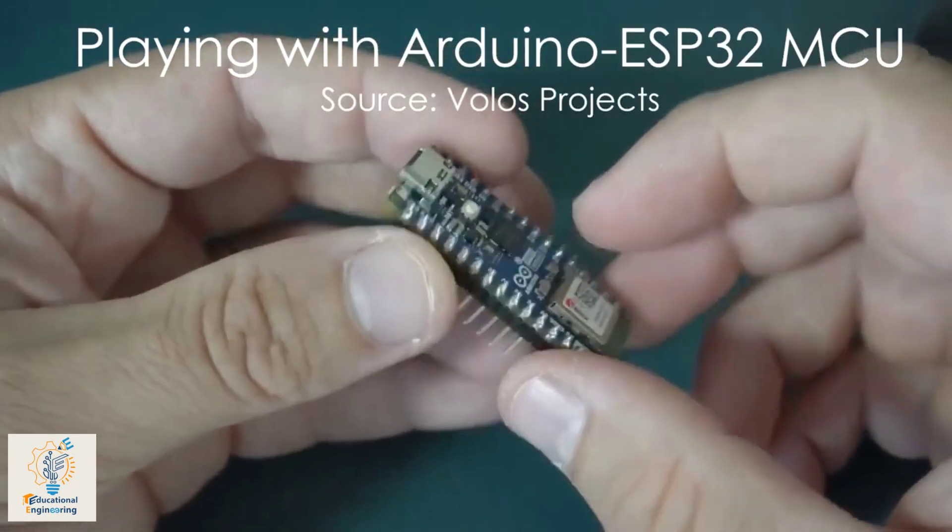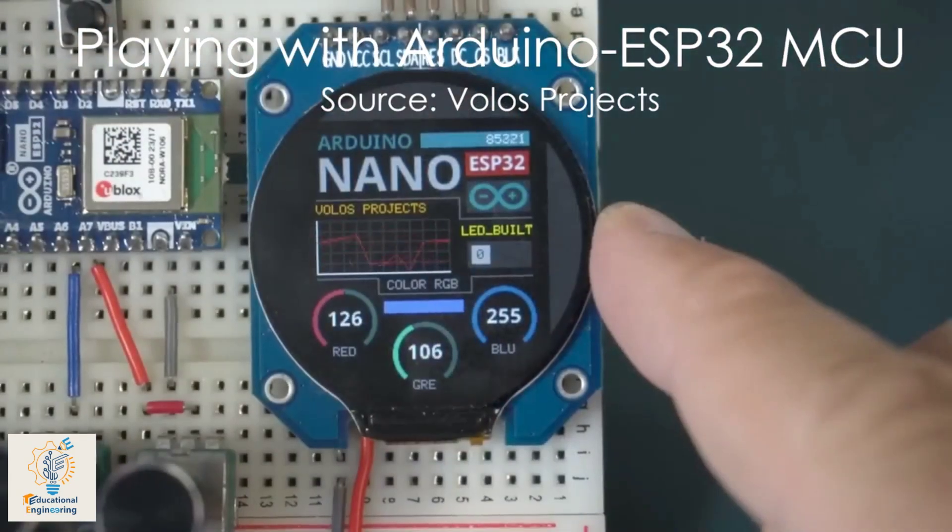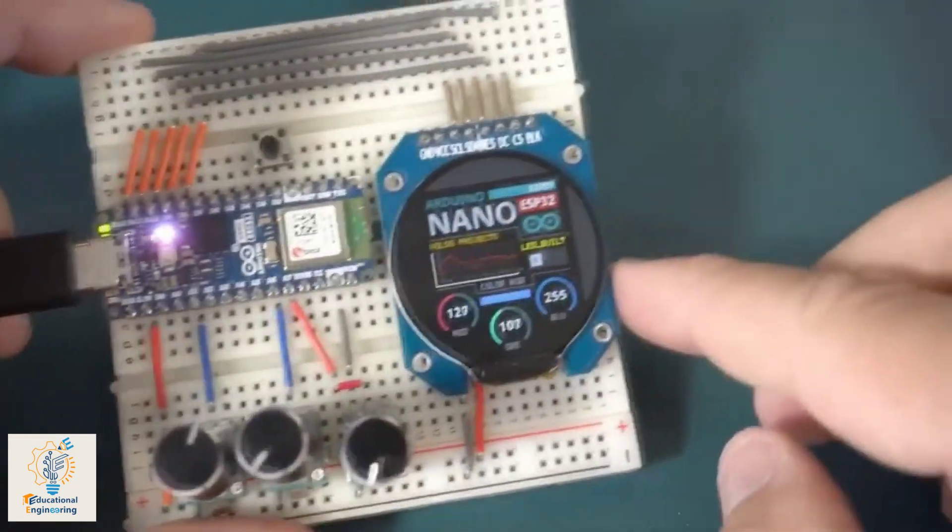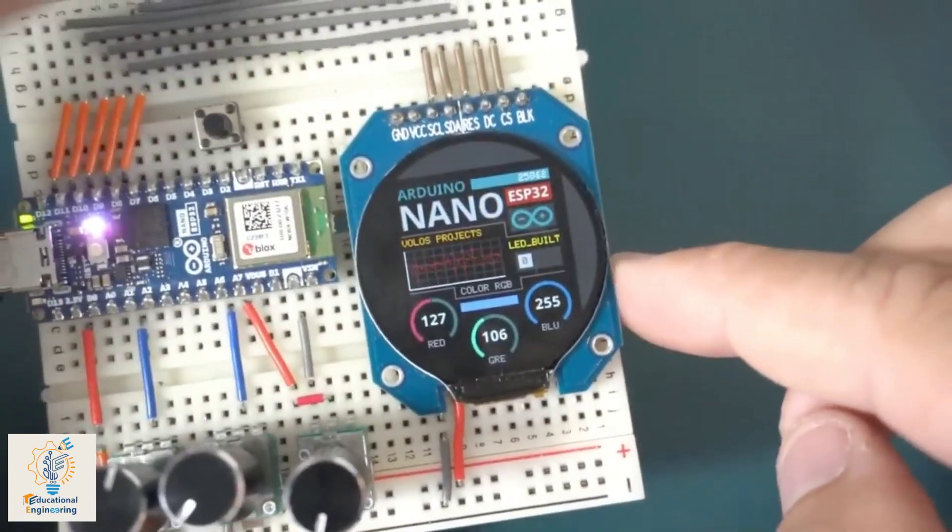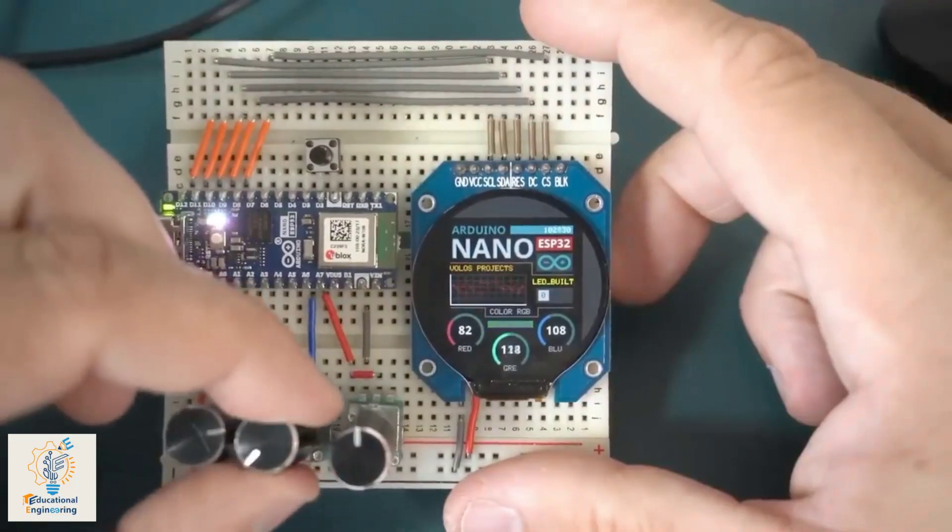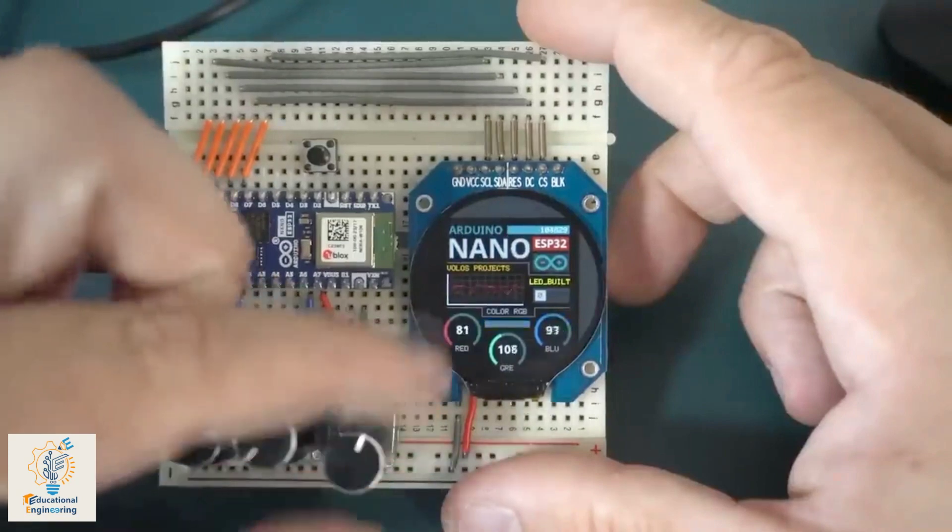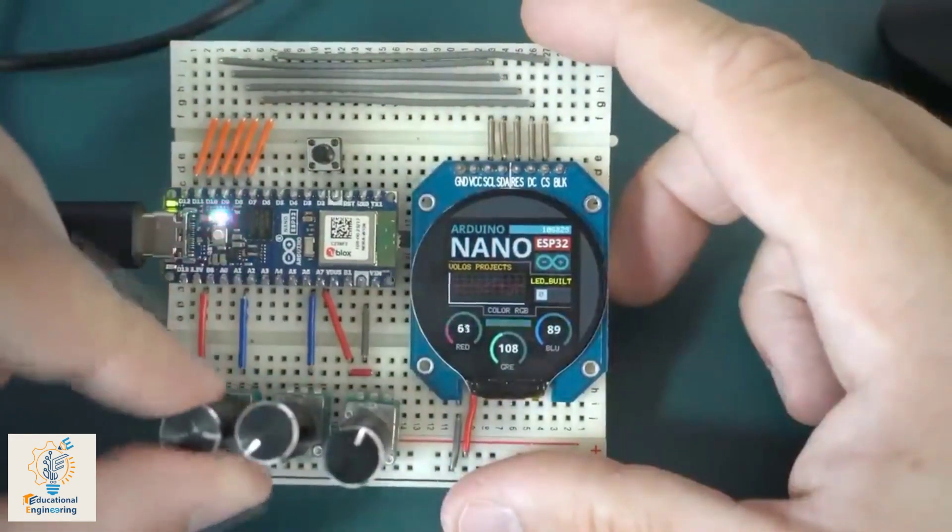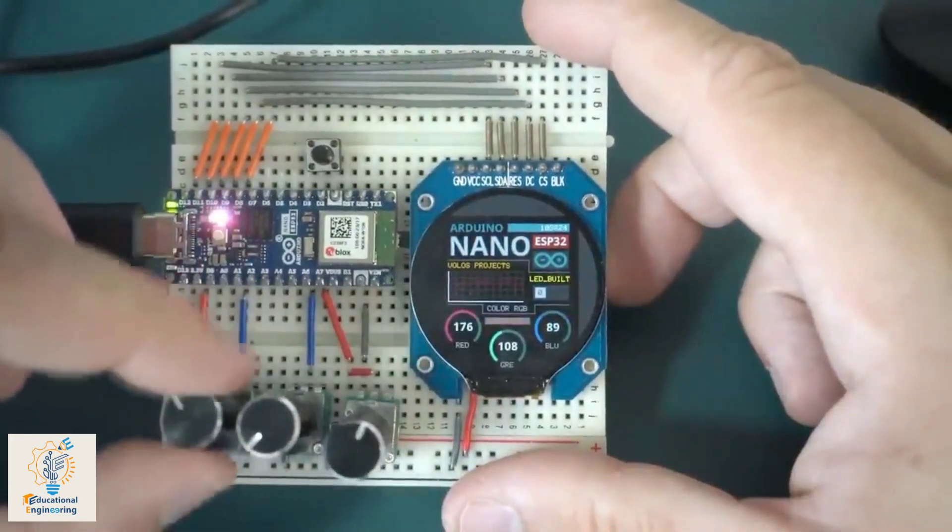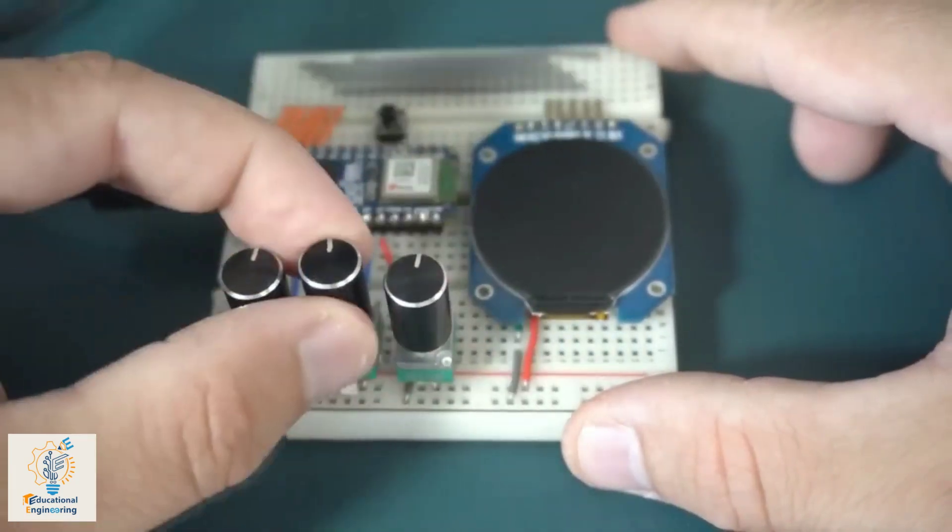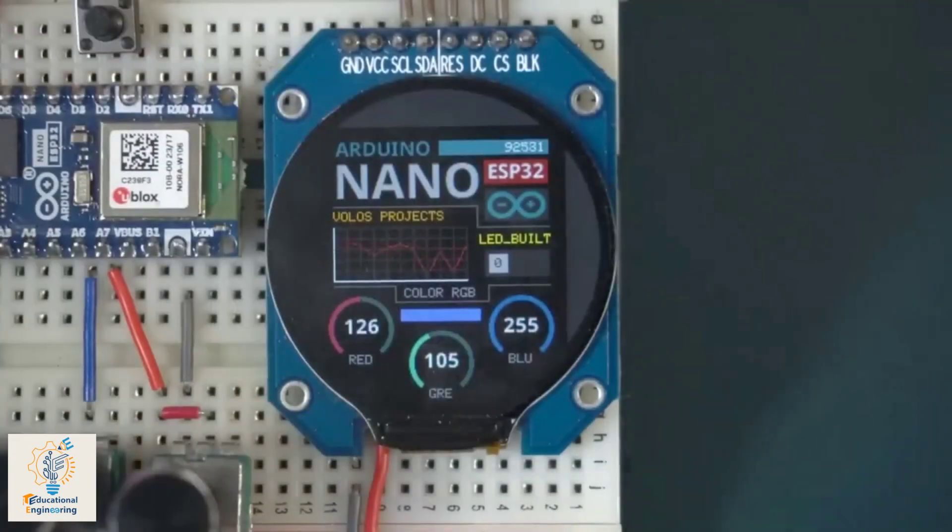After getting his hands on the new Arduino ESP32 board, Volos decided to make something new. First, he made a simple setup, where he varied the RGB parameters of his circular display. For this, he used three potentiometers, one for changing each color value, and the results were great.